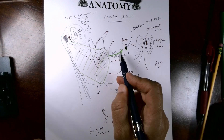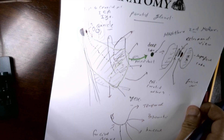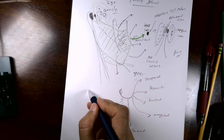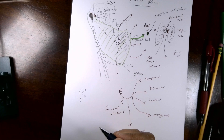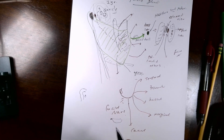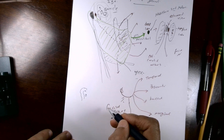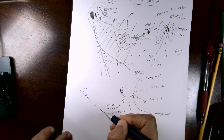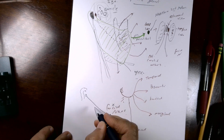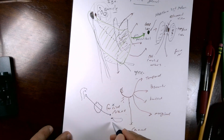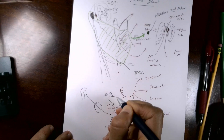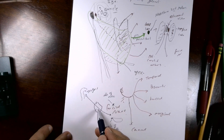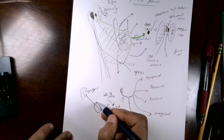For the surface anatomy of the duct: draw a line from the tragus to the angle of the mouth. The middle third of this line represents the parotid duct. The landmarks are the tragus, the angle of the mouth, and the ala of the nose — the middle third of the line from tragus to mouth angle represents the parotid duct.